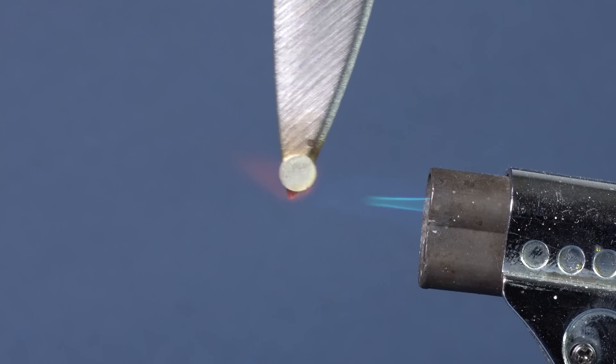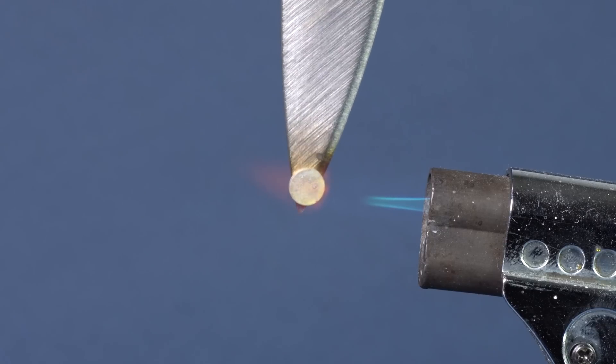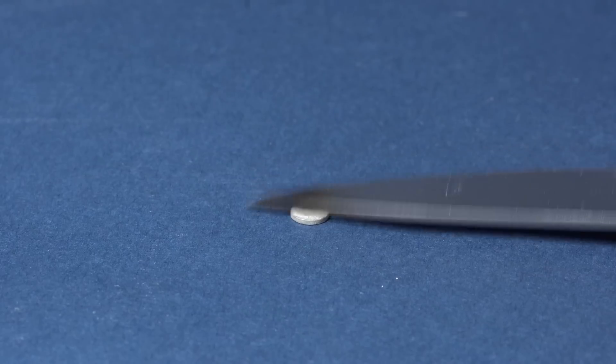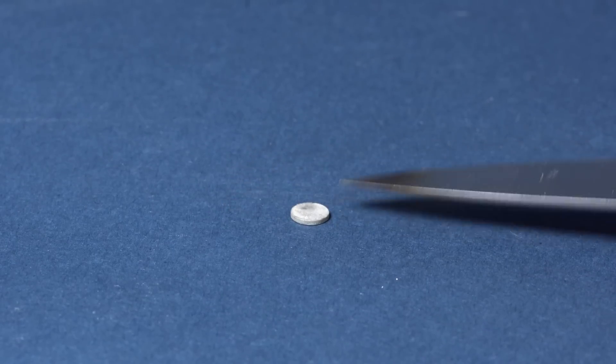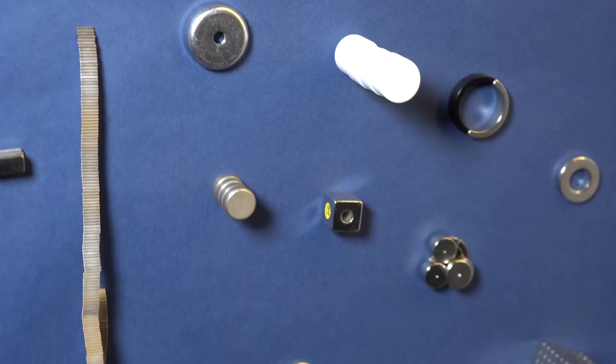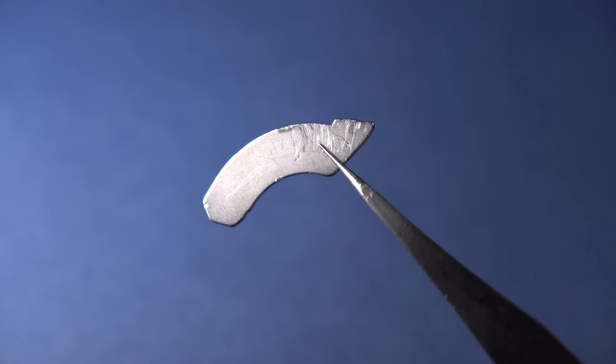But they had one major flaw which is a low Curie point. This means that their magnetic properties quickly weaken as the temperature increases up to 70 degrees Celsius, which is why they could not be used in some spheres.